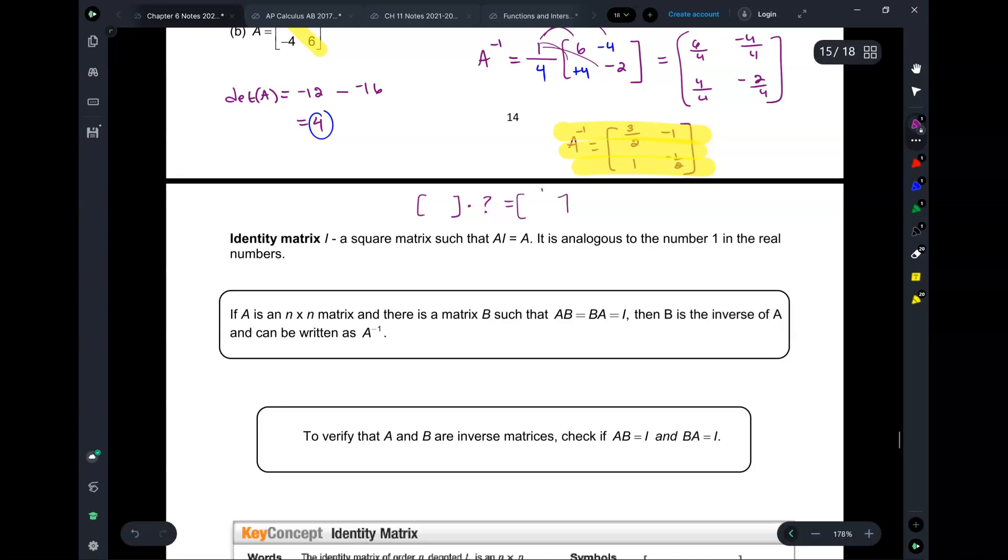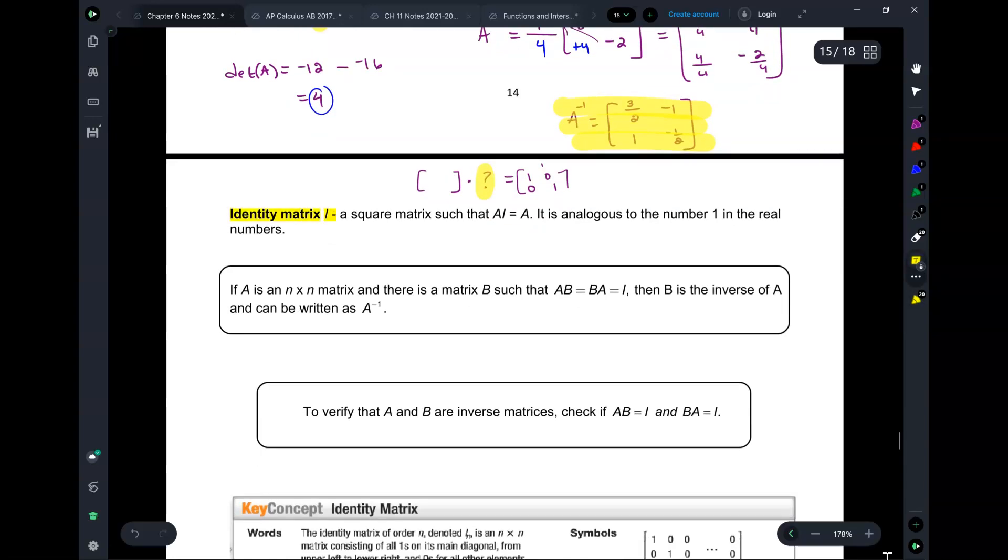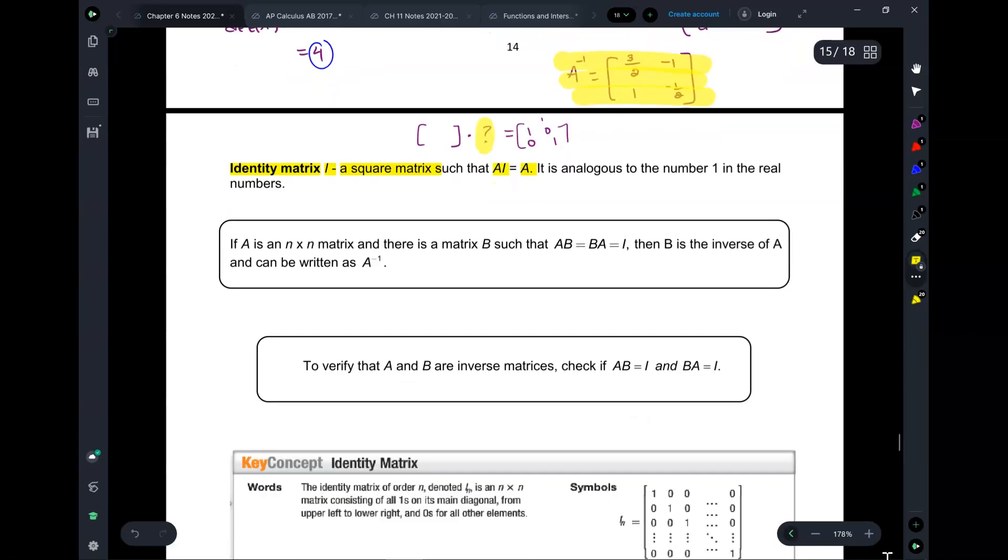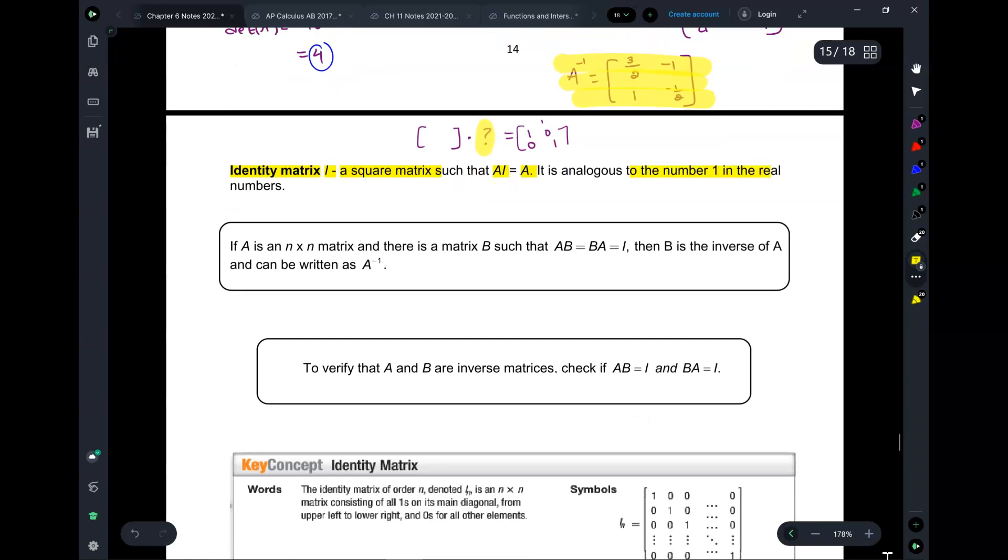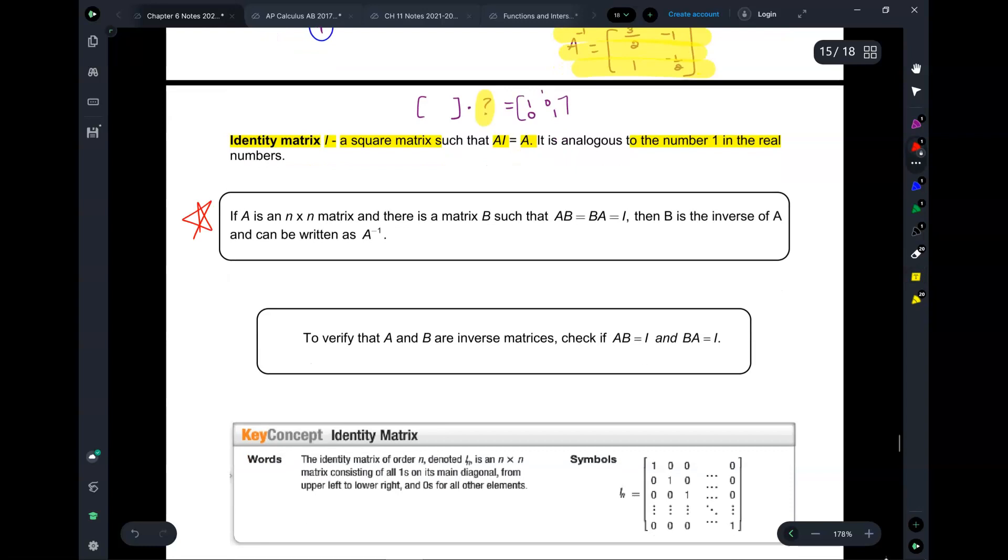If you have a matrix, what can you multiply it with in order to get the analogous version of a 1 in matrix form? In matrix form, the identity matrix is the same thing as the number 1 in real numbers. It's analogous to the number 1 in real life.